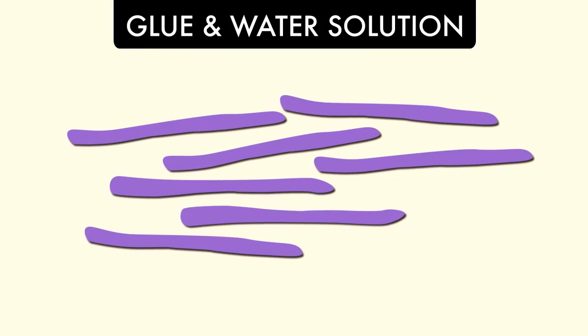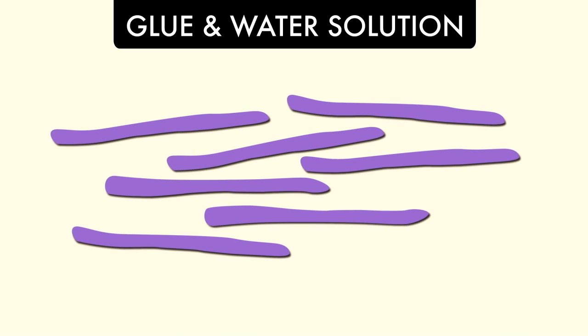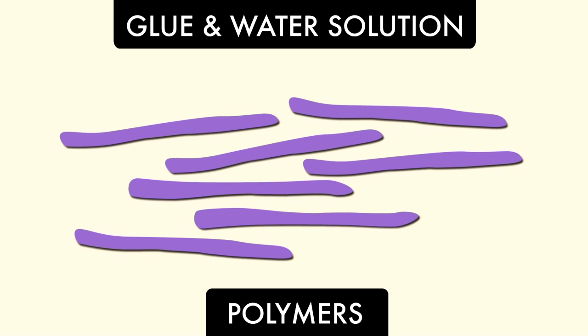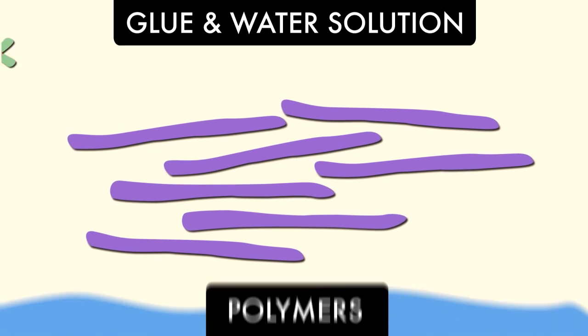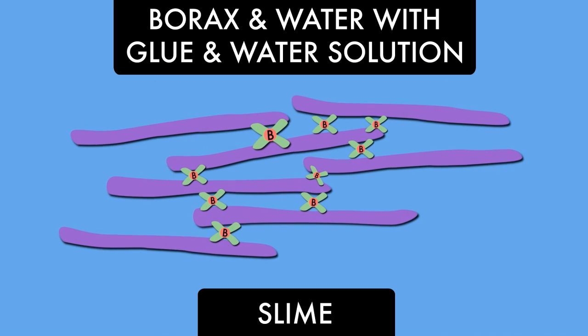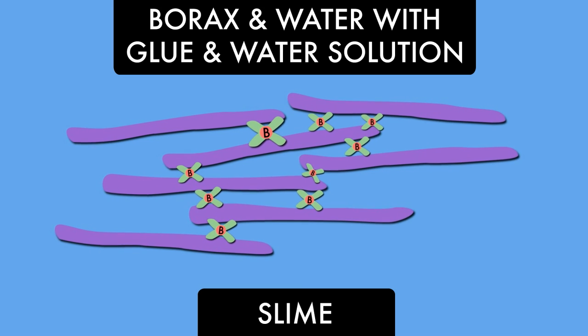The glue in the glue and water solution is made up of these long stringy molecules known as polymers. And they kind of slide past each other as a liquid. But when you add the borax and water solution, the borate ion hooks those long polymer molecules together and makes it kind of more solid. And that's what makes the slime that we get.